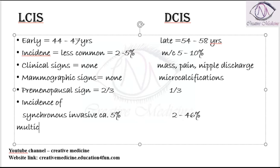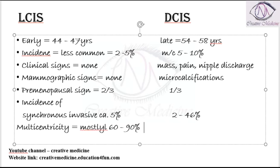Multicentricity. Lobular carcinoma in situ is mostly multicentric, that is around 60 to 90 percent. Ductal carcinoma in situ is less commonly multicentric, that is around 40 to 80 percent.